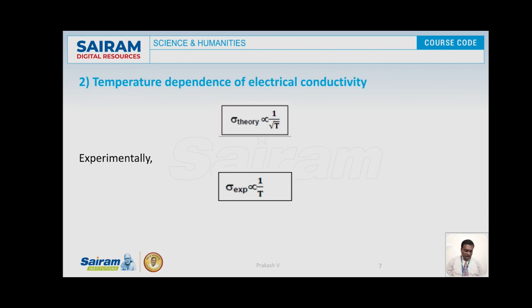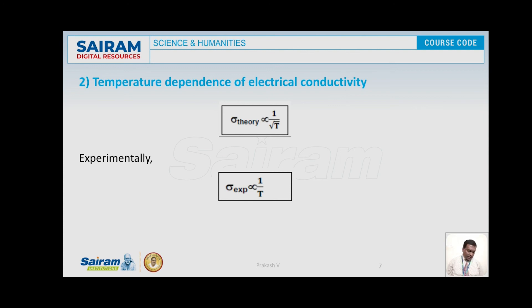Next, the dependence of electrical conductivity on temperature. As according to classical free electron theory, sigma is proportional to 1/√T. But experimentally it is found that sigma is proportional to 1/T only. So the theory predicts 1/√T but the experimental result is 1/T, representing another failure.